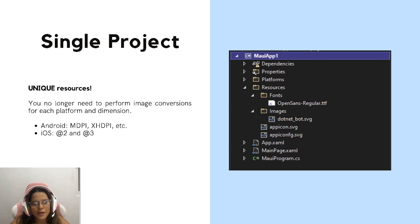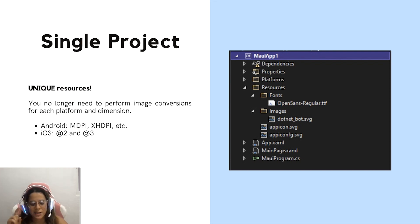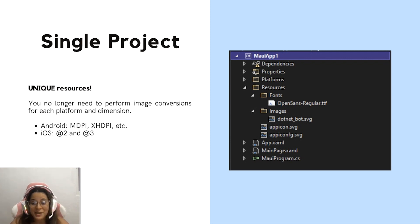Let's go deeper into resource management. You just have unique resources — you no longer need to perform image conversion for each platform or dimension. For example, in Xamarin on Android you have to take an image and convert it to different DPI sizes, and the same happens with iOS for the required dimensions. But in .NET MAUI, you just need one image, and .NET MAUI will do the magic — automatically converting the image and dimensions for the specific device on which you are running. You don't have to think about it because .NET MAUI will be working for you.